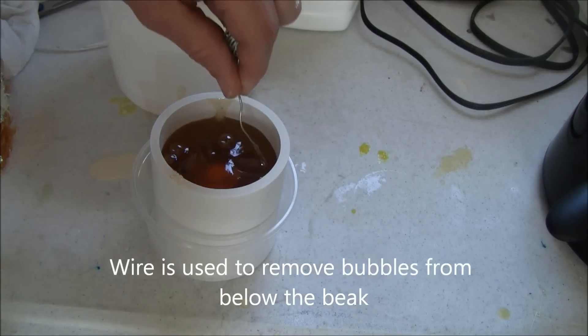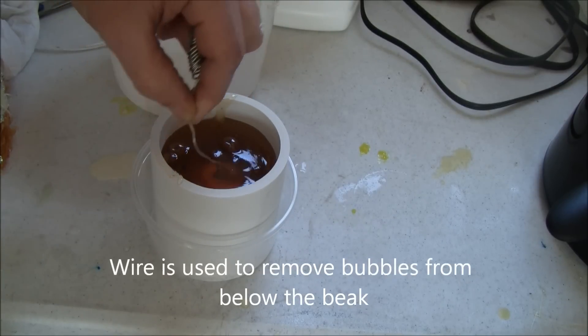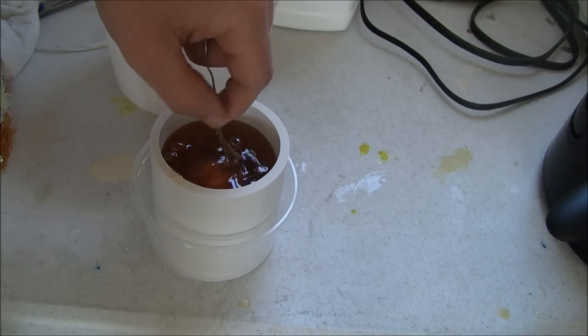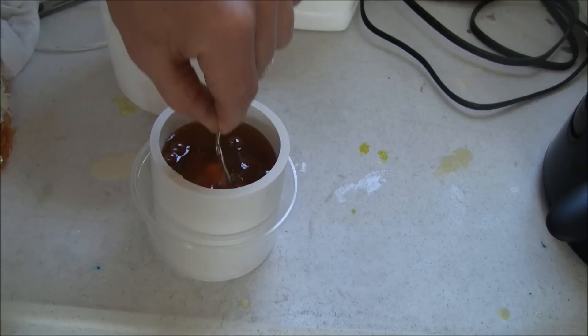A toothpick or a paper clip can be used to pull bubbles away from any areas where bubbles may stay, such as in undercuts or sharp corners. In this case, we expect bubbles to adhere to the neck area and below the beak.